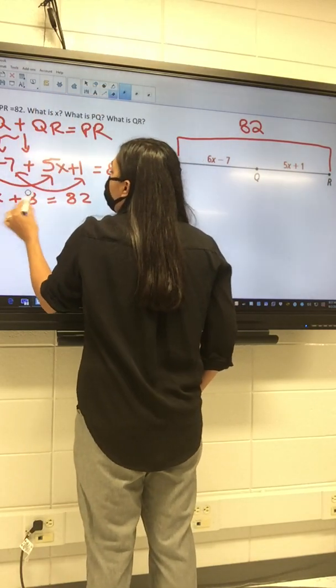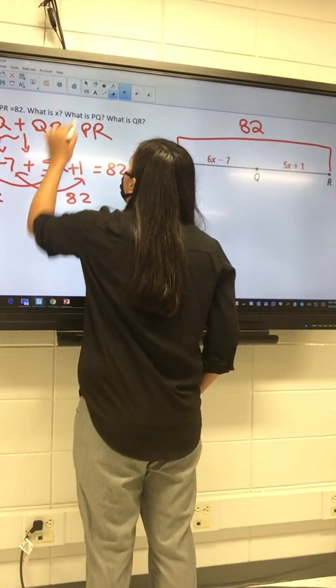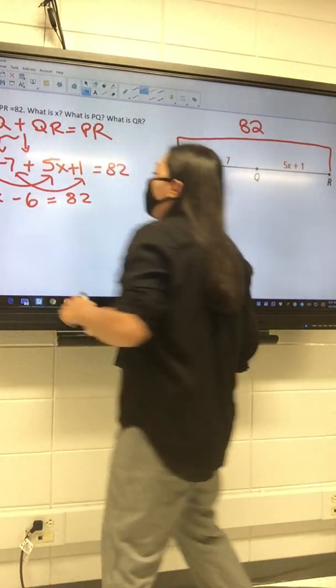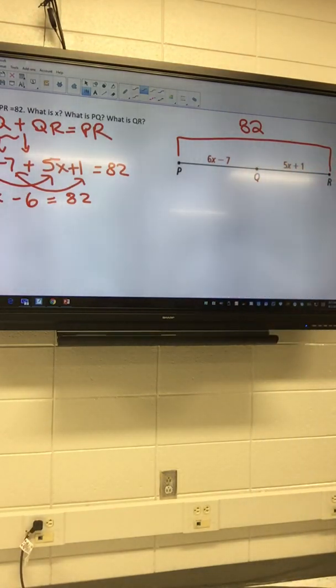Your fault, I wrote down the wrong thing. Why didn't you look and tell me? Okay, so 11x minus 6 equals 82. So now what?